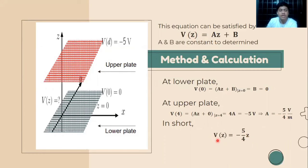In short, we get the potential energy V(z) = -5z/4.